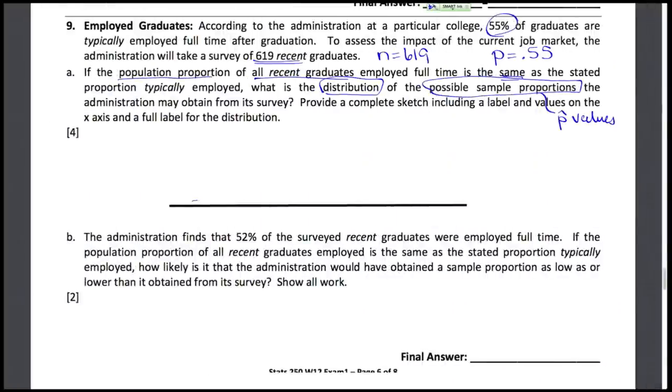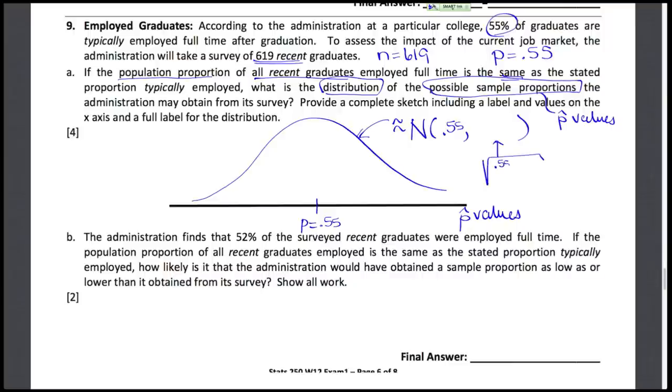I want to draw an approximate normal model for the values of p-hat, these p-hat values that are possible, sample proportion values, which will vary approximately normally around the true proportion p, which was stated what if it's still 0.55? 0.55. And what about that standard deviation, the give or take? The standard deviation should be using that p and doing 1 minus that value of p over the sample size, 619, and then taking the square root of that. This standard deviation ends up being about 0.02.